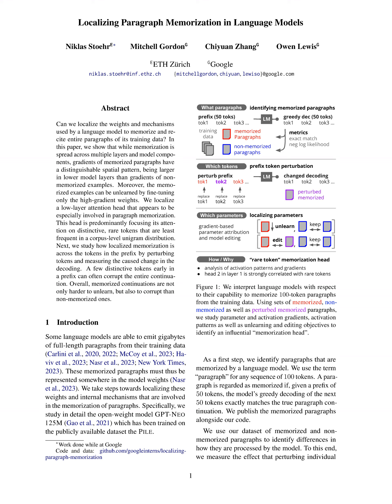Specifically, the GPT-NEO-125M model, trained on the Pile dataset. The study focuses on localizing the weights and internal mechanisms involved in the memorization of paragraphs by analyzing differences in how memorized and non-memorized paragraphs are processed by the model. The study also perturbs individual tokens in a paragraph's prefix to measure the effect on the model's memorization, further refining the definition and understanding of memorized paragraphs in the context of the research.